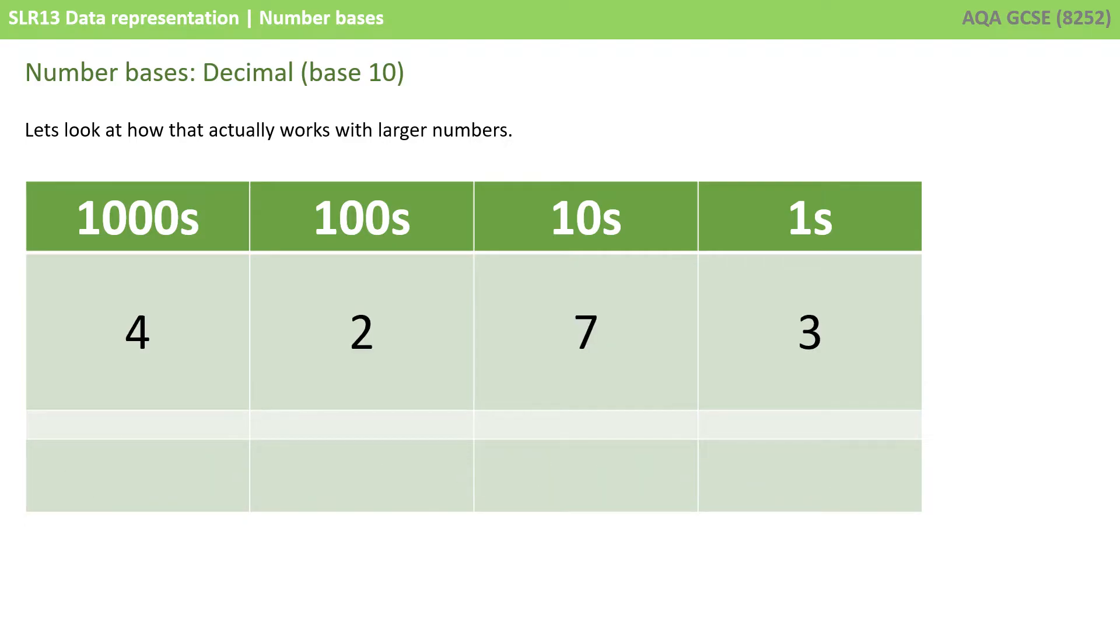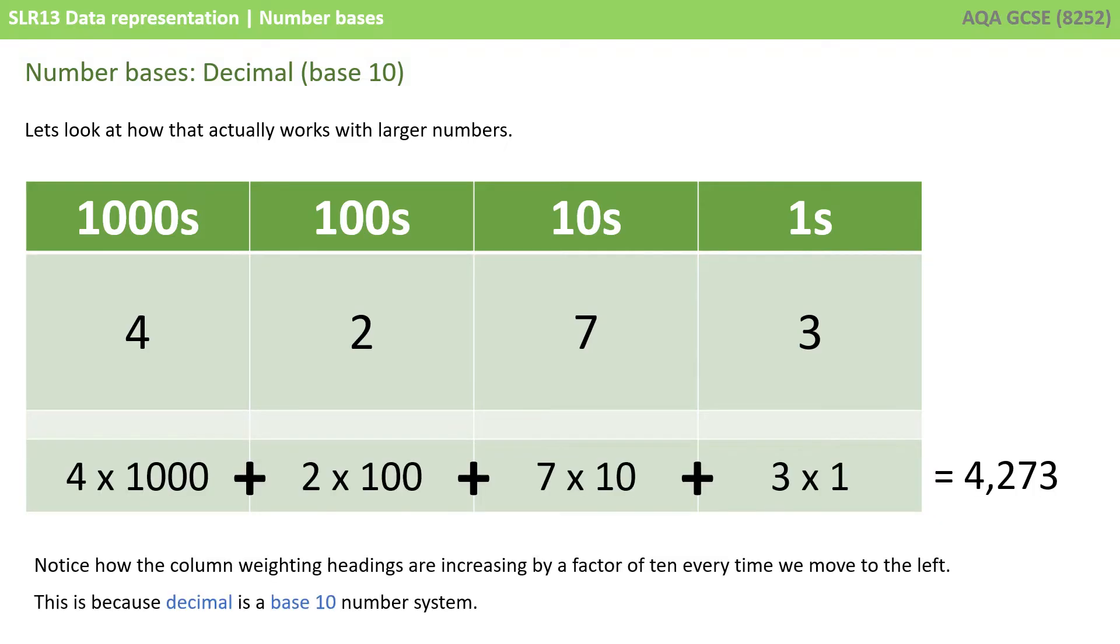If we take a bigger number now, 4273, the exact same principle is applied. The column on the far left is our thousands column, so we have 4 times 1,000. We add that to the next column, which is 2 lots of 100. We add that to 7 lots of 10 and 3 lots of 1s, which is 4,273.